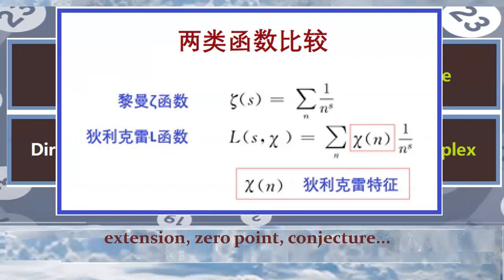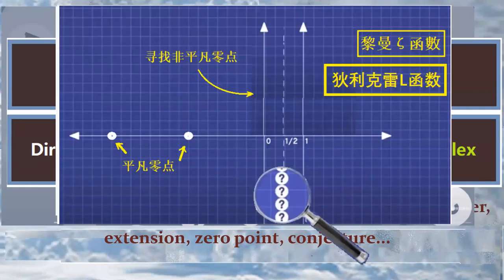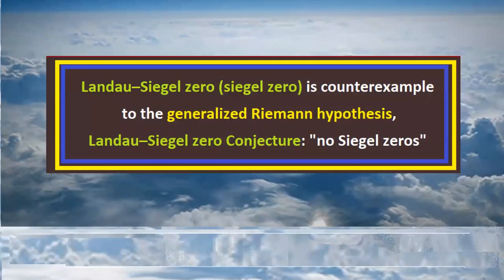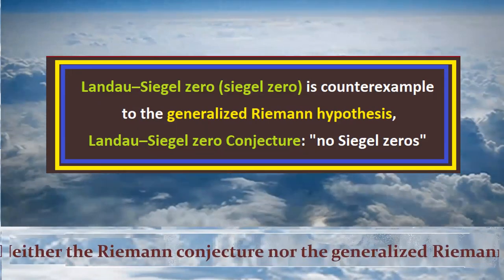The L function and the zeta function correspond to each other: extension, zero point, conjecture. Landau-Siegel zero is counterexample to the generalized Riemann hypothesis. Landau-Siegel zero conjecture: no Siegel zeros.